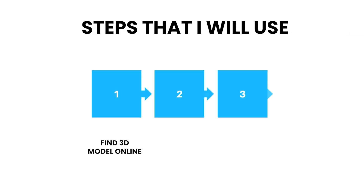This was my plan to save my reputation. Step one: find a 3D model. Step two: export a D5 render. Step three: create a render. Pretty simple, but I had to repeat this process until I could only create realistic renders, and I only had a total of 24 hours.